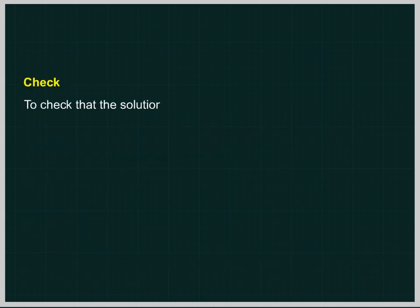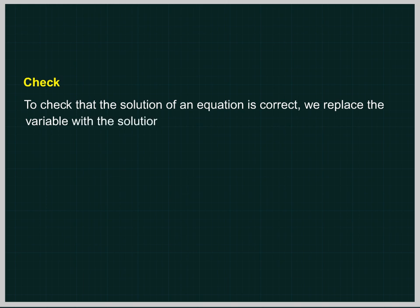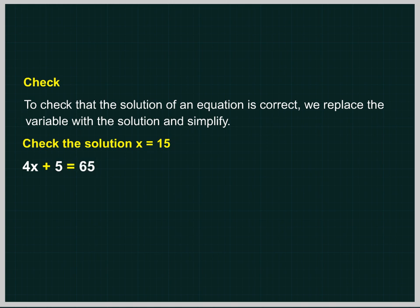To check that the solution of the equation is correct, we replace the variable with the solution and simplify. 4x plus 5 equal to 65. 4 multiplied by 15 plus 5 equal to 65, where x equal to 15.